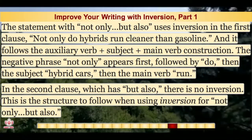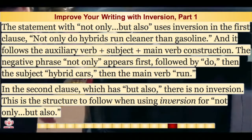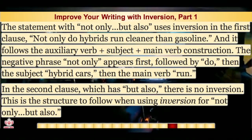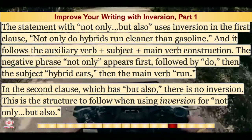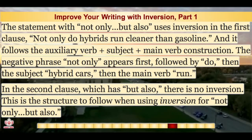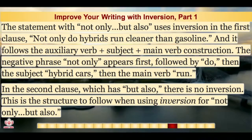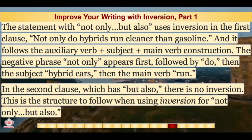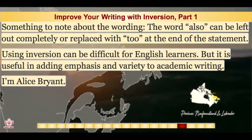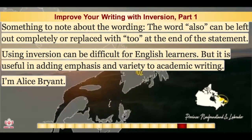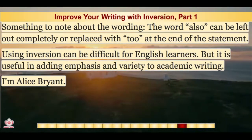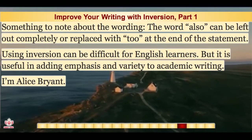The statement with "not only but also" uses inversion in the first clause: "Not only do hybrids run cleaner than gasoline." It follows the auxiliary verb plus subject plus main verb construction. The negative phrase "not only" appears first, followed by "do," then the subject "hybrid cars," then the main verb "run." In the second clause, which has "but also," there is no inversion. This is the structure to follow when using inversion for "not only but also." Note that the word "also" can be left out completely or replaced with "too" at the end of the statement. Using inversion can be difficult for English learners, but it is useful in adding emphasis and variety to academic writing.